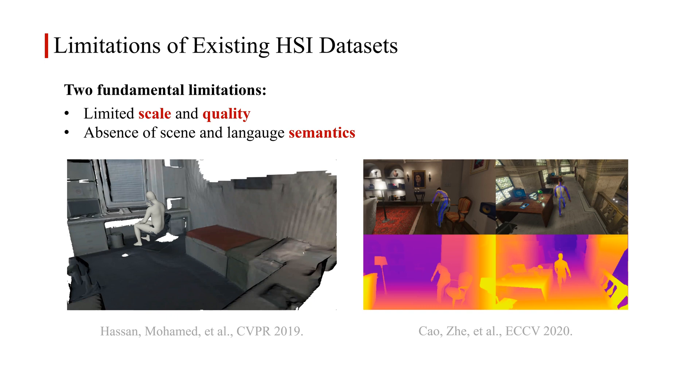However, the limitations in existing HSI datasets make it still challenging to achieve such a goal. First, they have a limited data scale, motion quality, and scene variety. For example, Prox only contains jittering human motions in 12 indoor scenes. The synthetic dataset GTAIM only has 49 scenes and lacks 3D human shapes and diverse movement styles.